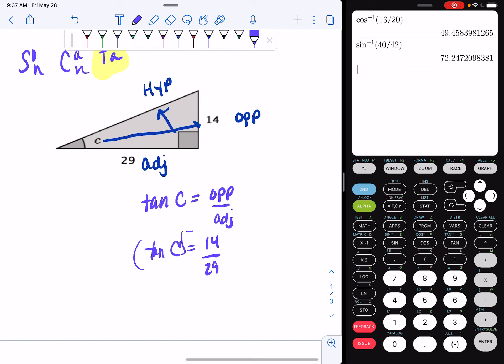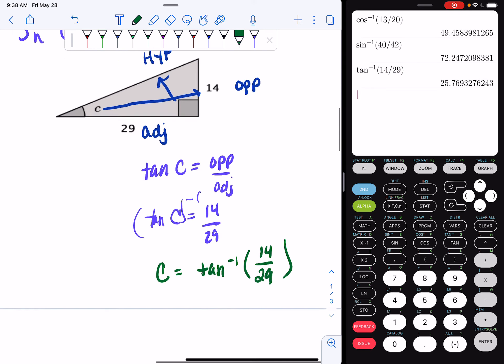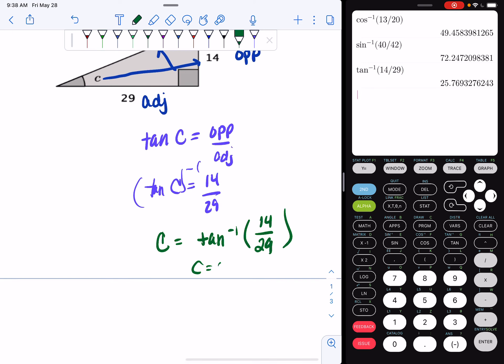Do your inverse trig. And I get C is equal to tan negative 1, or arctan of 14 over 29. Now I do second tan, 14 over 29. Hit enter. And I get 25.8 degrees. And that's your final answer.